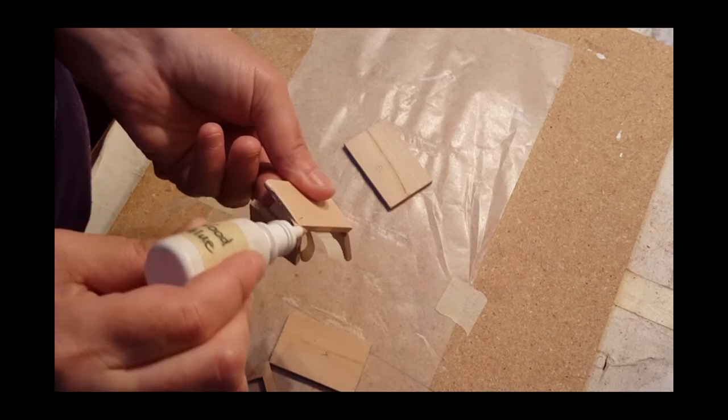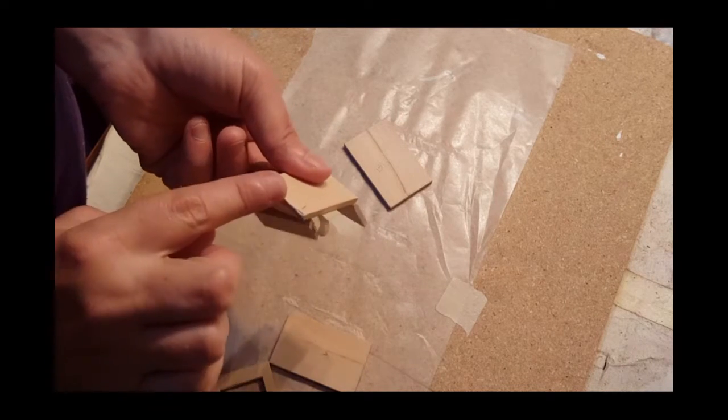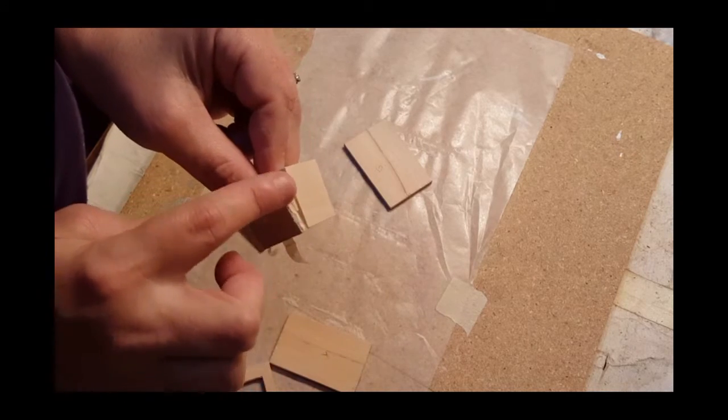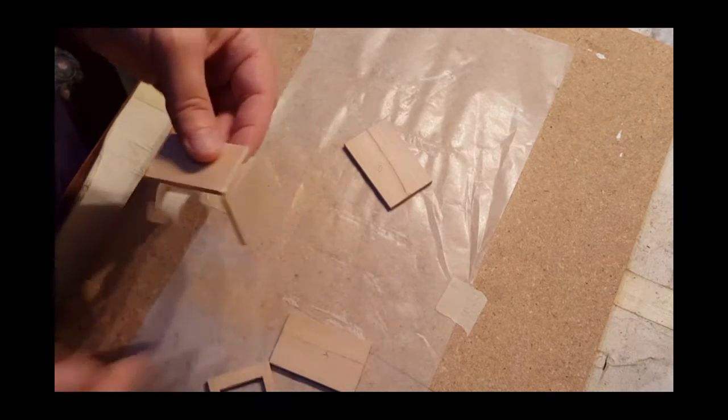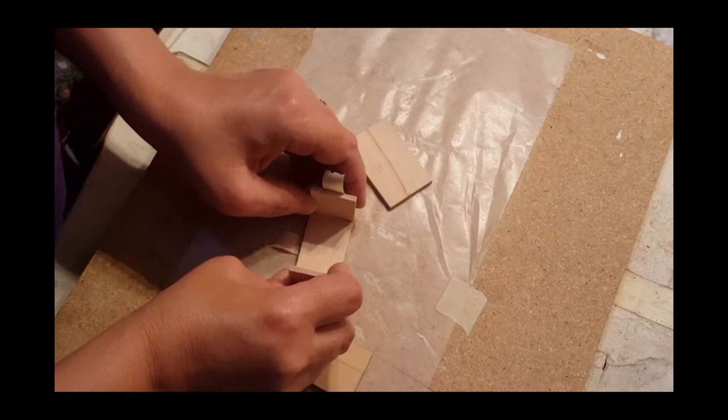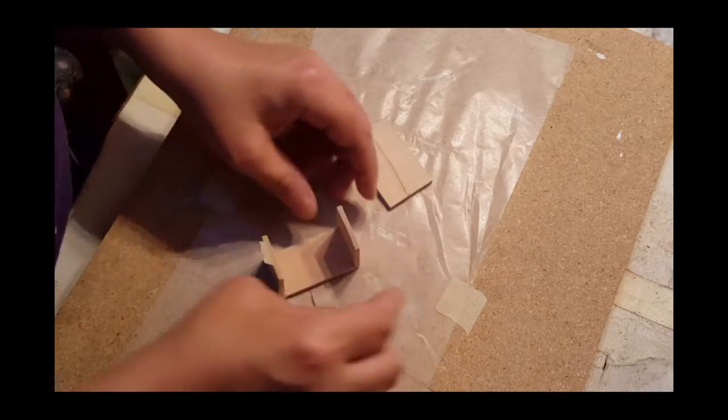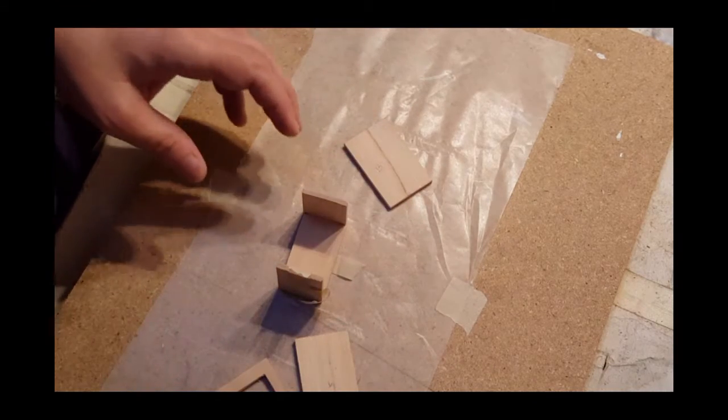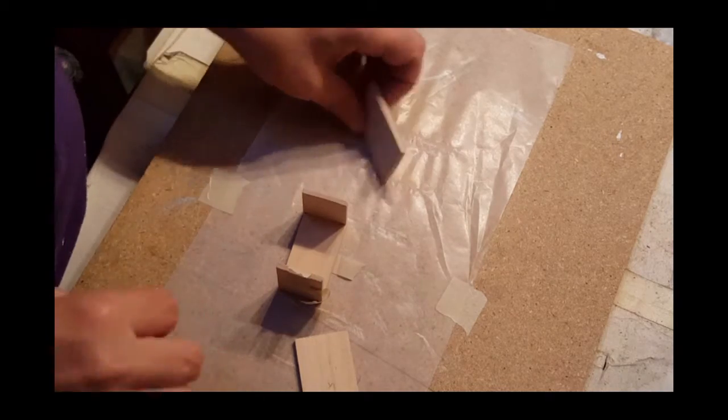Put some glue right here on the edge. Try not to do too much like I just did. After you've done that, you want to fold your pieces of tape up and have it standing straight up. You need to keep this square, so if you're not sure if it's square, get a square and square it.